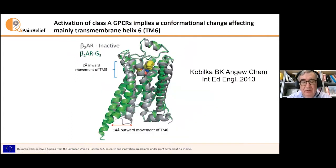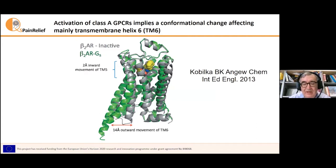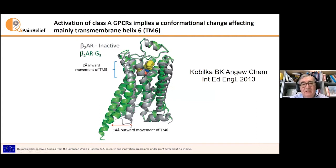The activation of the receptor involves a conformational change, which is most important at transmembrane helix 6, or TM-6. Here we have the crystal structures of the beta-2 adrenergic receptor in inactive and active states — inactive in gray, active in green. After receptor activation, an outward displacement of about 14 Angstroms of TM-6 is observed. You can see this displacement comparing the two crystal structures inactive and active of the beta-2 adrenergic receptor.